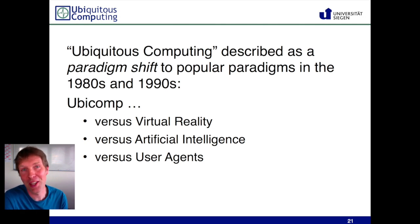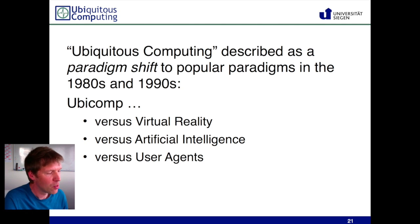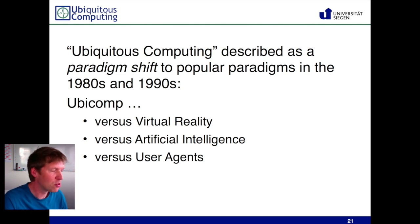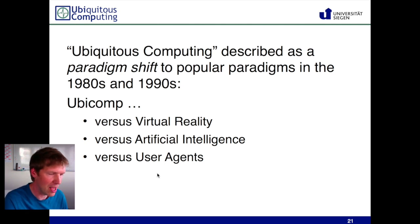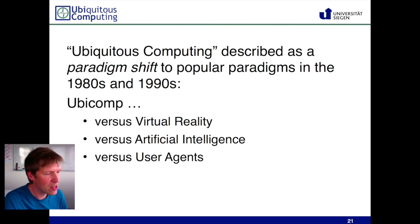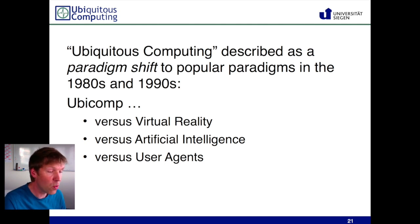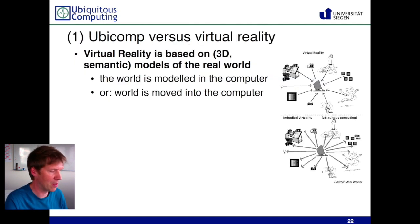Welcome to the next section of Ubiquitous Computing. Last time we saw that Ubiquitous Computing was put forward by Mark Weiser completely as an opposite to several research directions, and that's where we will continue today. We saw that virtual reality, artificial intelligence, and user agents were, at the time in the 90s, very hot topics in computer science, and Mark Weiser put those three against his vision of Ubiquitous Computing to show what was new in his paradigm.